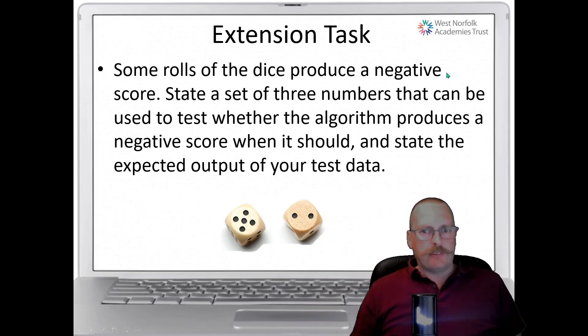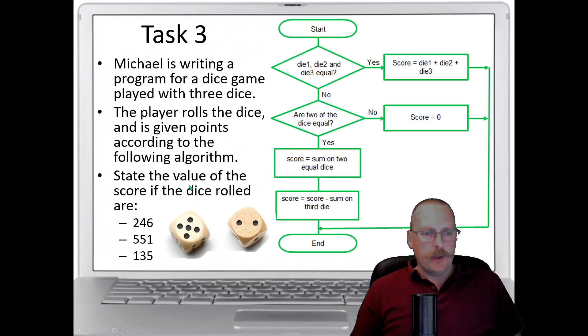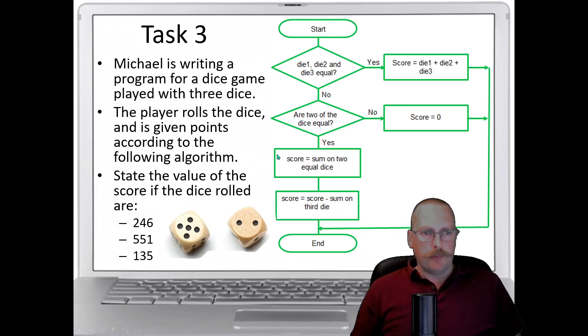Now using that previous flow diagram you can actually get a negative score. So if I go back to the flow diagram by rolling three dice you could end up with a minus number. What you need to do is find a set of three numbers that will produce a negative number. Again pause the video to complete this task.